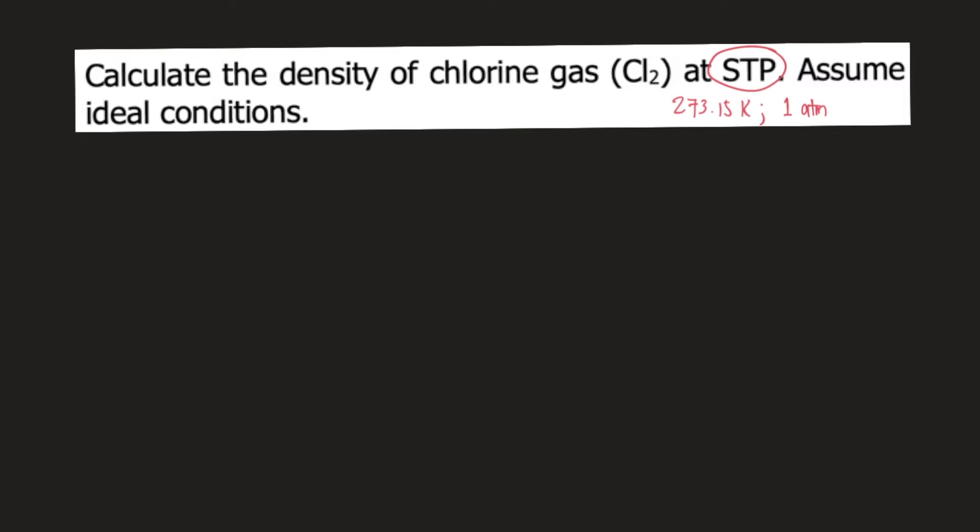If you want to calculate the density of an ideal gas, the formula is MP over RT. If you want to see how I derived this equation from the ideal gas law, you can check the description box.